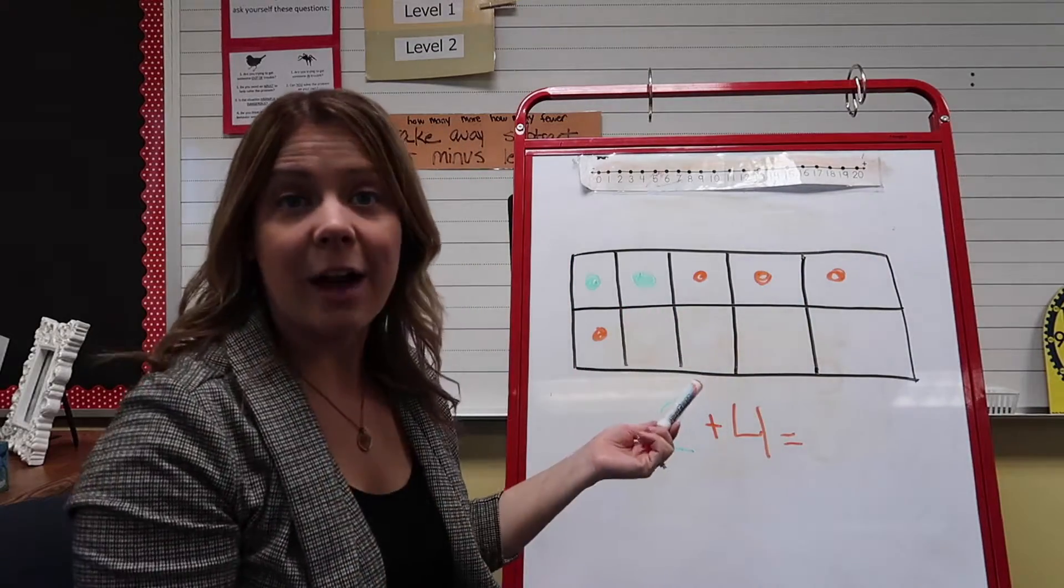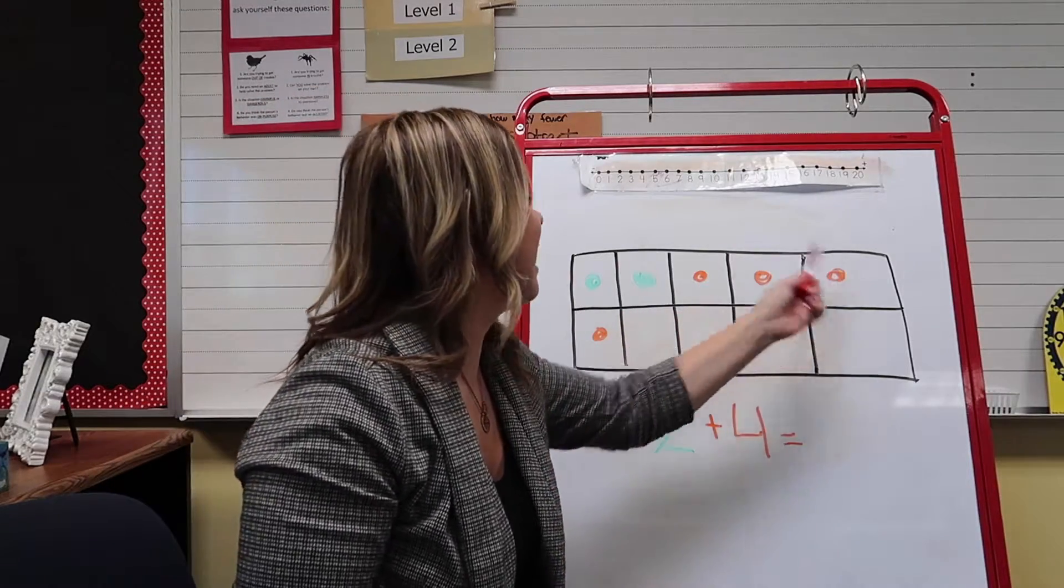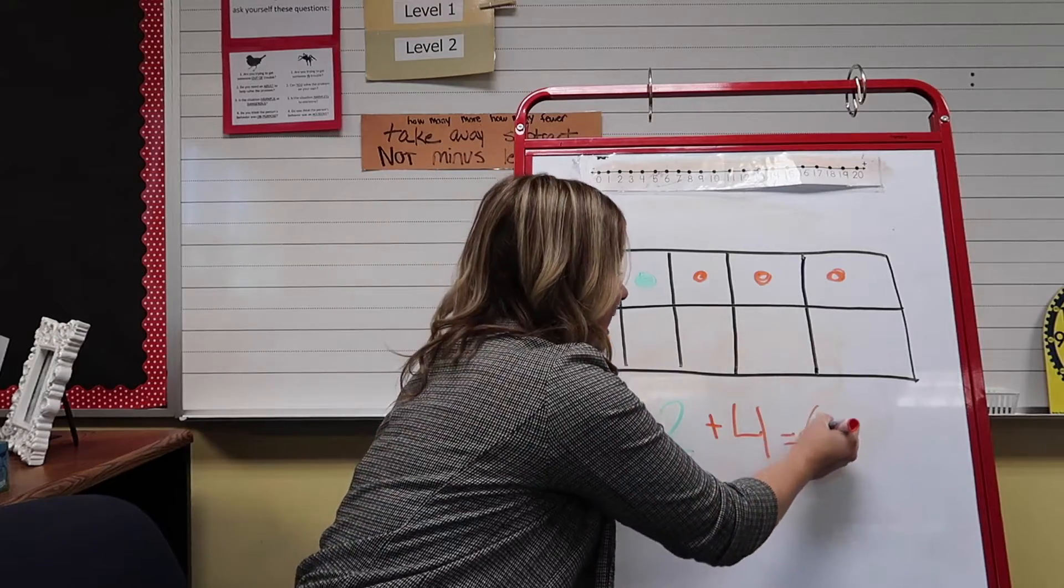And now we can count and see what 2 plus 4 is. Ready? 1, 2, 3, 4, 5, 6. The answer is 6.